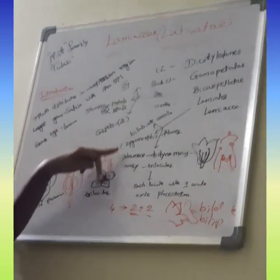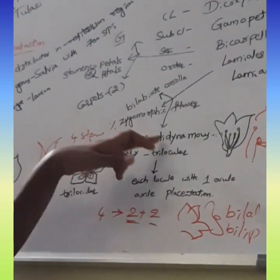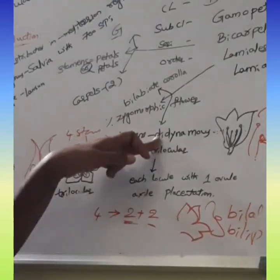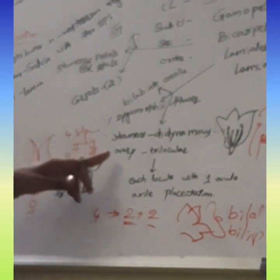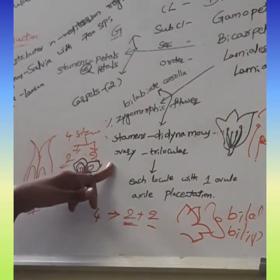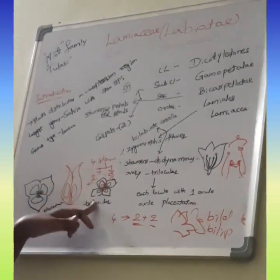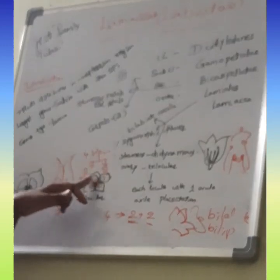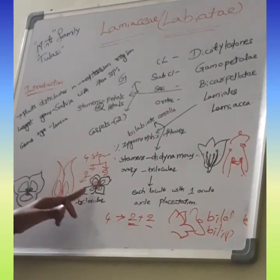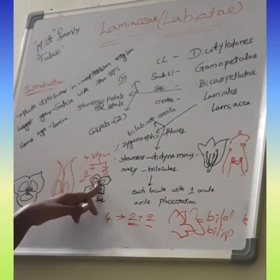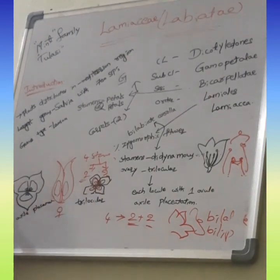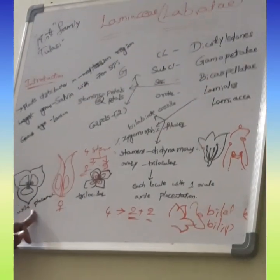And ZYGOMORPHIC FLOWER, STAMENS are DIDYNAMOUS STAMENS. In case, whose STAMENS are present, TWO STAMENS are HIGHER HEIGHT, and TWO STAMENS are in LOWEST HEIGHT. Then OVARY, TRILOCULAR OVARY. This TRILOCULAR OVARY, in this TRILOCULAR OVARY, each LOCULAR OVARY has a SINGLE OVULE. These entire OVULES are ARRANGED in AXILE PLACENTATION.